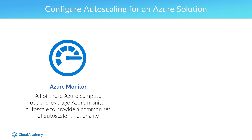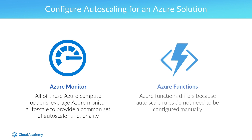It's important to note that Azure Functions differs slightly from these other compute options, as autoscale rules do not need to be configured manually. Azure Functions automatically allocates compute power whenever code is running and scales out as necessary to handle additional load.